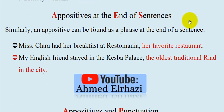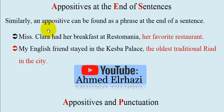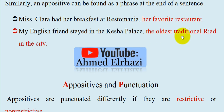Appositives at the end of sentences. Similarly, an appositive can be found as a phrase at the end of a sentence. For example: 'Miss Clara had her breakfast at Ristomania, her favourite restaurant.' And: 'My English friend stayed in the Kasbah Palace, the oldest traditional Riyadh in the city.'